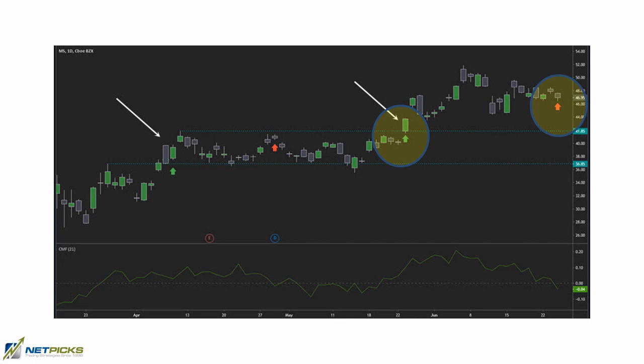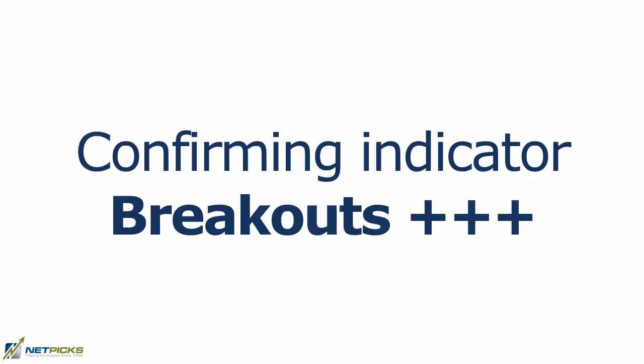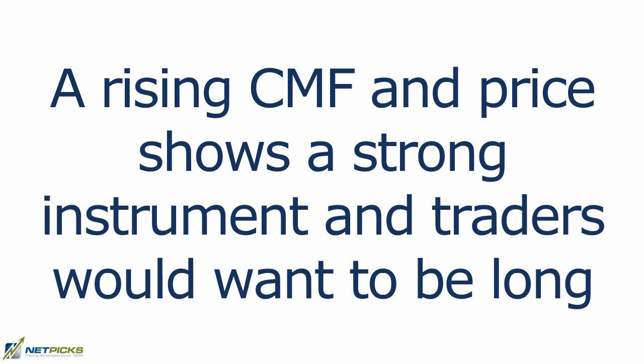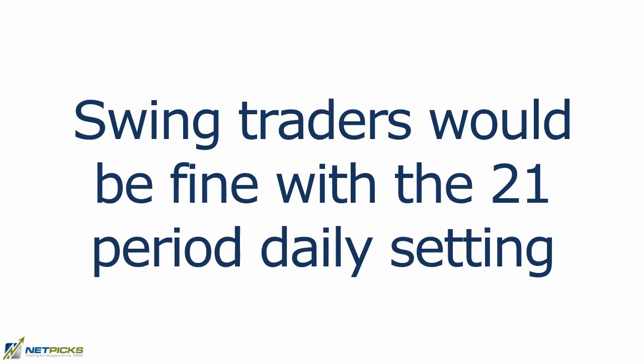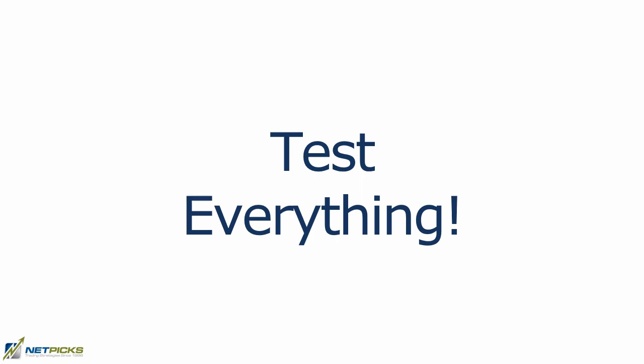The bottom line: generally use it as a confirming indicator. It's great for breakout traders — catching a major trend from breakouts can pay off tenfold and make your year. A rising indicator with rising price signals a strong instrument and you'd want to get long. A falling indicator with falling price signals weakness and you'd want to get short. Swing traders should stick with a 21-period setting; for longer-term positions, adjust the period. Whatever you decide, you have to test it — don't just slap on an indicator and start trading it live. Thanks for watching; any questions, pop them below.